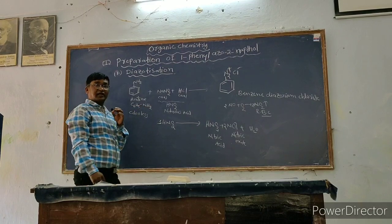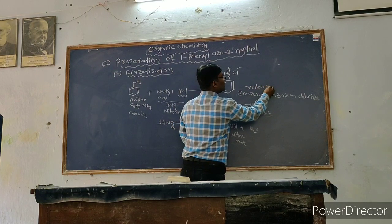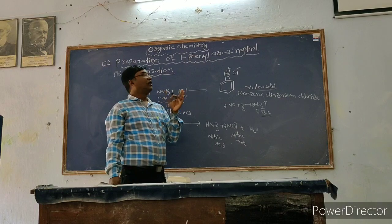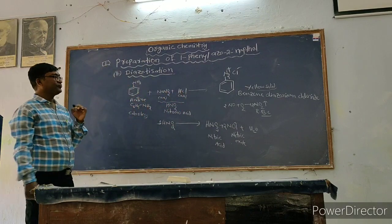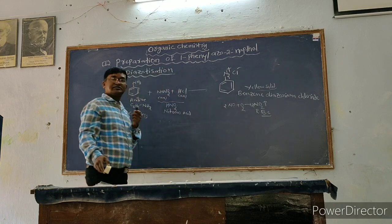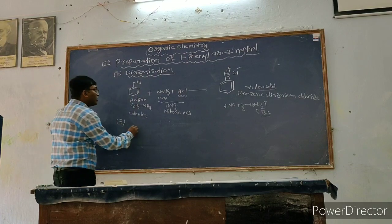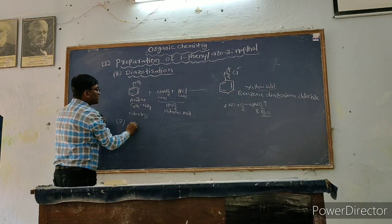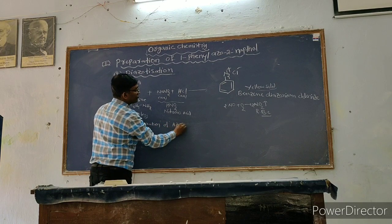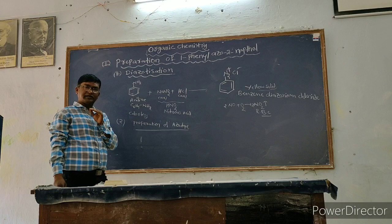All these reactions are colorless, and here you get a yellow color solid — benzene diazonium chloride is a yellow color solid. If you don't get the yellow color solid, you need to stop and restart the experiment. After getting benzene diazonium chloride, we proceed to the second step — the actual preparation step.